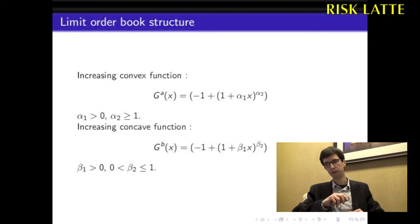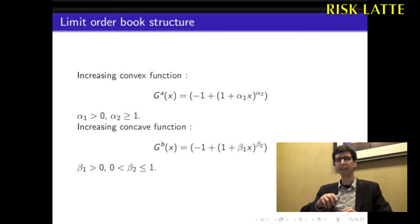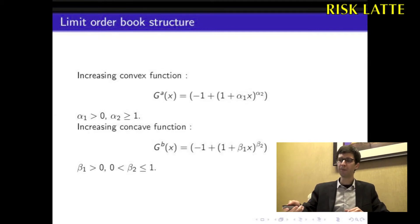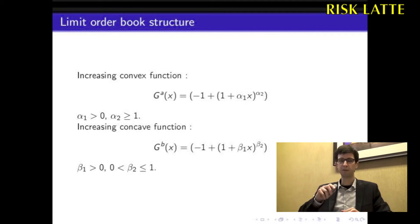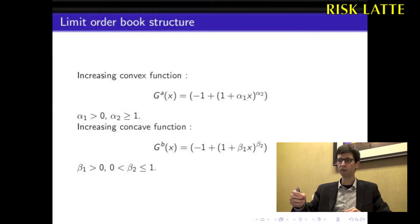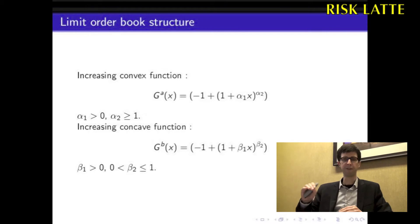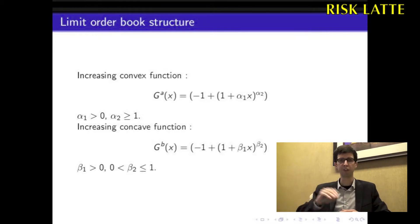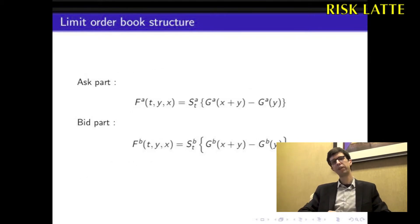For the bid part of the order book, we define an increasing concave function called GB. The parameter beta_1 must be greater than 0 and beta_2 must be between 0 and 1. Here beta_2 is responsible for the concave shape of the function — think of the shape of a square root function. Once we have that, we can define the structure of the ask part and the bid part.